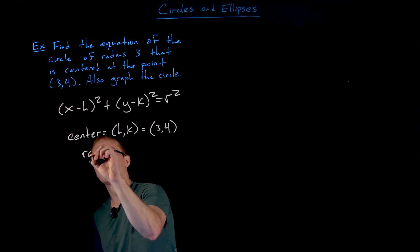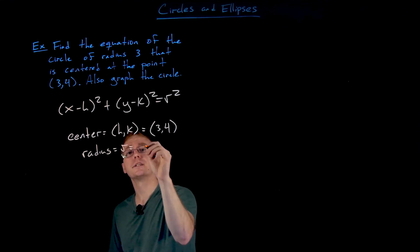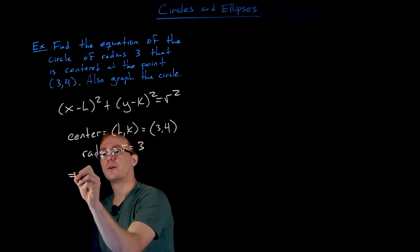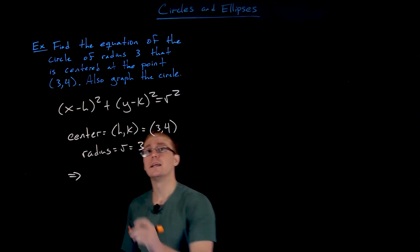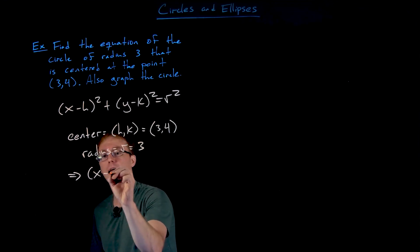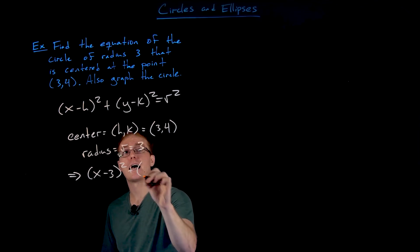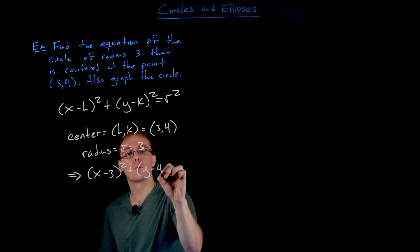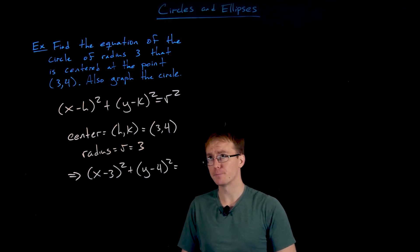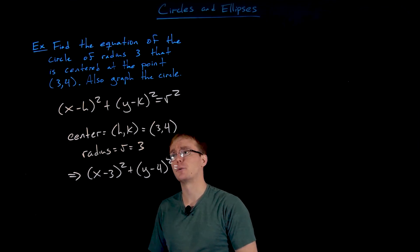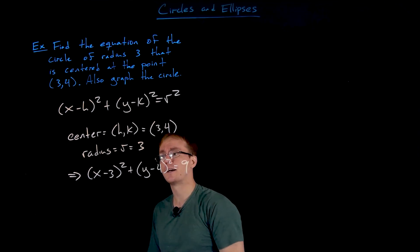Our radius r is also three. Putting it all together, the equation is (x − 3)² + (y − 4)² = 9. That's our x minus h squared plus y minus k squared on the left, and our radius three squared, which is nine, on the right.